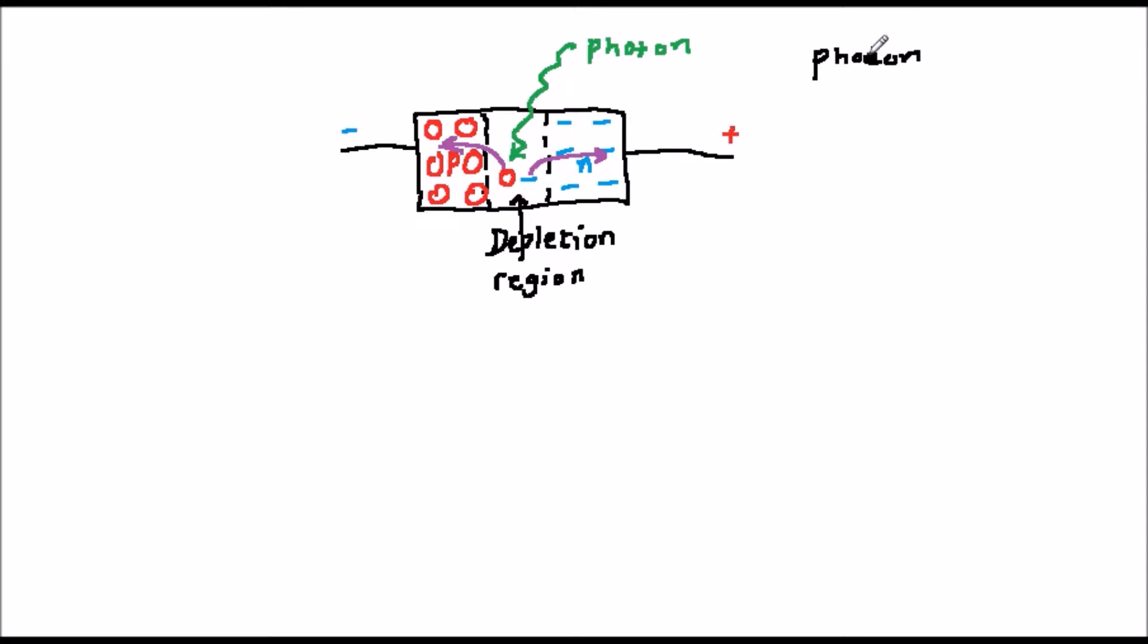The electron migrates towards the positive electrode and the hole migrates towards the negative, generating a small current as they move.